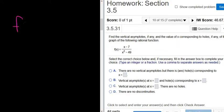In this problem, we have to find all of the vertical asymptotes and all of the holes for the function x minus 7 over x squared minus 49.